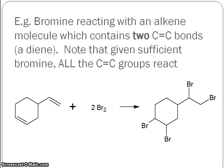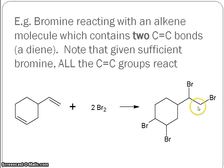Larger alkenes can be reacted in the same way. If you have a diene — two carbon-to-carbon double bonds in the molecule — as long as you've got enough bromine, each will react. So you've got bromine adding on to each carbon of the first double bond, and then the other double bond, so long as there's enough bromine, can also react — one bromine attaching to each of those carbons as well.